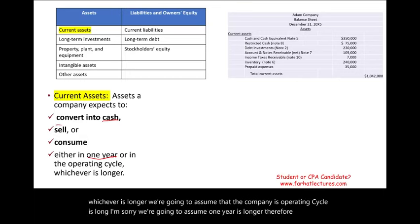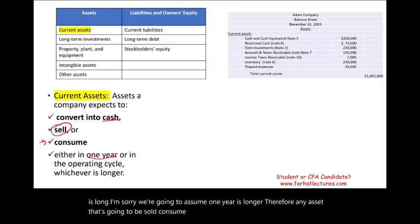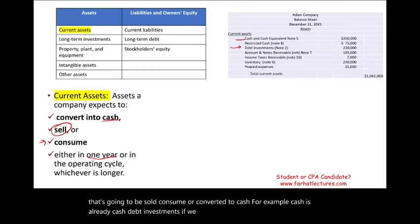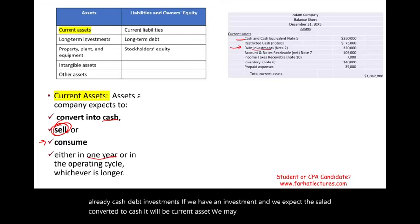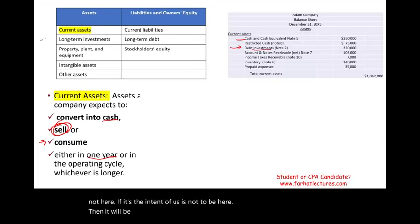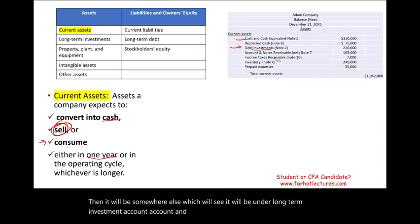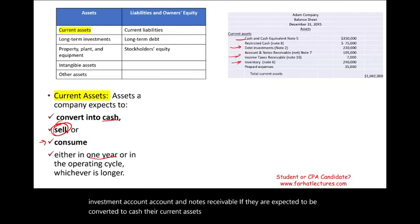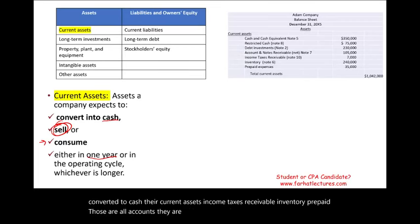Therefore, any asset that's going to be sold, consumed, or converted to cash is a current asset. Cash is already cash. Debt investments — if we have an investment and we expect to sell it, convert it to cash, it will be a current asset. If the intent is not to sell it in the near term, then it will be under long-term investments. Accounts and notes receivable, if they are expected to be converted to cash, are current assets. Income taxes receivable, inventory, and prepaid — those are all accounts expected to be converted to cash, sold, or consumed within the next 12 months.